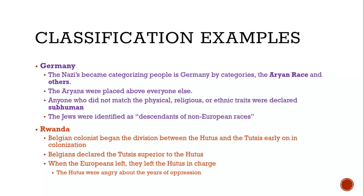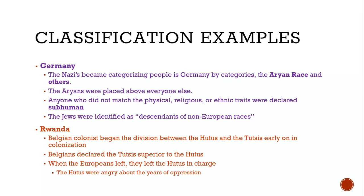In Rwanda, this is something we can see as a result of colonization. Belgian colonists began the division between Hutus and Tutsis early in colonization, declaring that the Tutsis were superior to the Hutus. But when the Europeans left with decolonization, the Hutus — being the majority — were in charge, and they were angry about years of oppression.